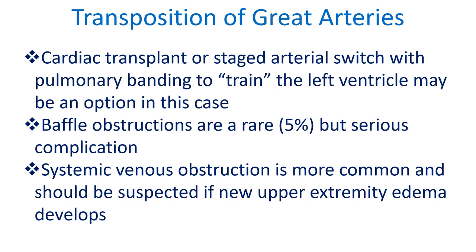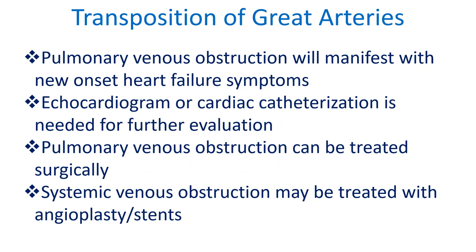Baffle obstructions are a rare but serious complication, occurring in about 5% of cases. Systemic venous obstruction is more common and should be suspected if new upper extremity edema develops. Pulmonary venous obstruction will manifest with new onset heart failure symptoms. Echocardiogram or cardiac catheterization is needed for further evaluation. Pulmonary venous obstruction can be treated surgically, while systemic venous obstruction may be treated with angioplasty or stents.